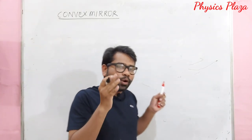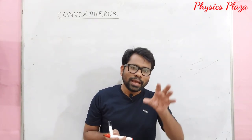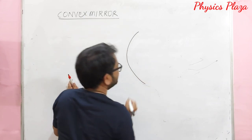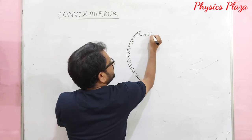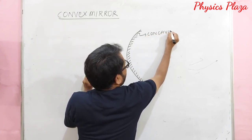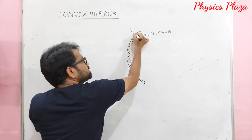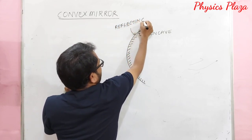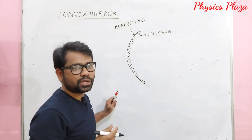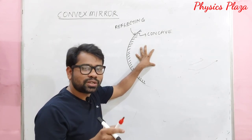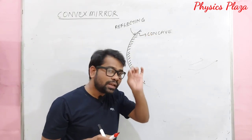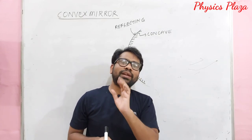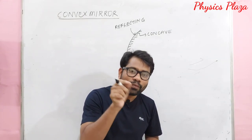The terms related to a convex mirror are similar to those of the concave mirror. The center of the glass hollow sphere of which the convex mirror is a part is called the center of curvature, represented by C. The geometric center of the convex mirror is called the pole, represented by P. The axis joining P and C is called the principal axis.